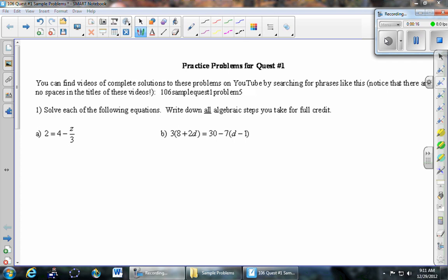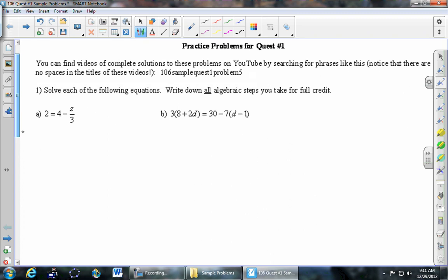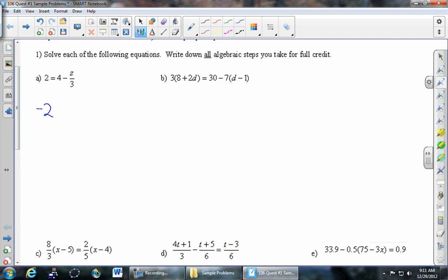So the first thing I'll do is subtract 4 from both sides. And then we're going to get rid of that denominator by multiplying both sides by 3. And then finally multiply both sides by negative 1 or divide both sides by negative 1 to get z equals 6.